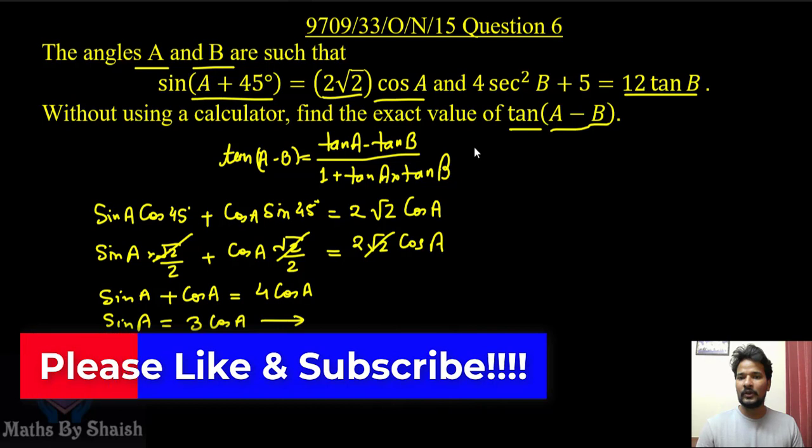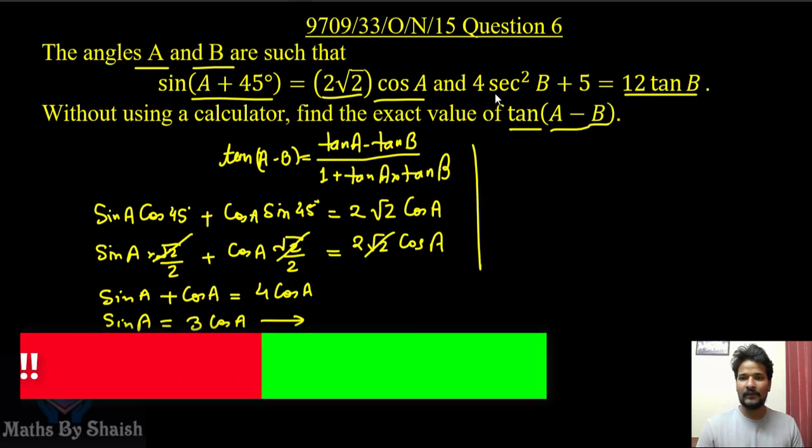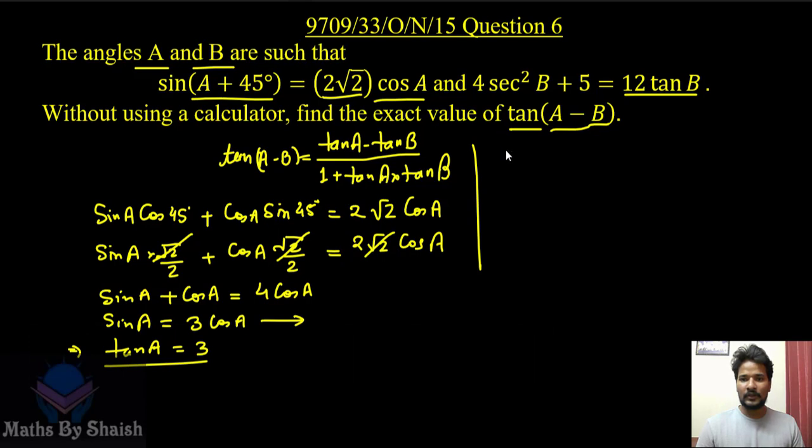And now from the another equation, we will solve for tan B. tan B is already given and we know the identity sec²θ = 1 + tan²θ. So if we use it here, we will get 4(1 + tan²B) + 5 = 12 tan B.